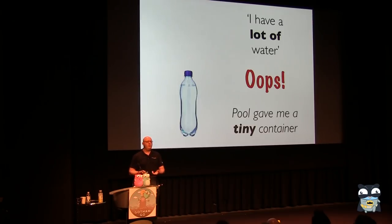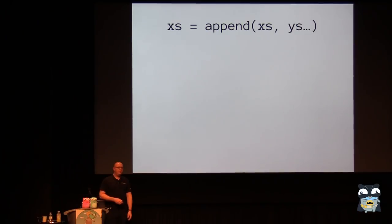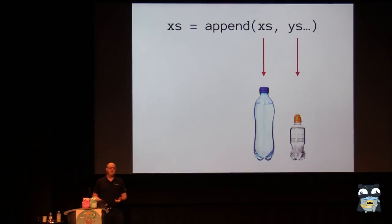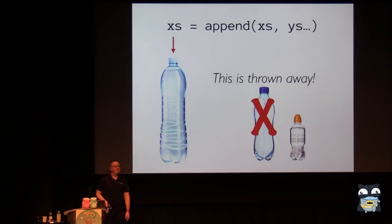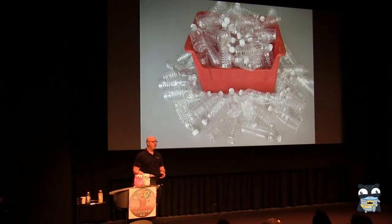That leads to circumstances where you have a little bit of water and the pool gives you a giant container — you don't need all that space. Or the opposite: you have a lot of data but only got a tiny container. And that raises the question of what happens when the container doesn't fit — this is like append. If you have some x's and append some y's and the container isn't big enough, the runtime allocates a bigger slice, pours everything over, and gives it back. But the old one is thrown away, so if you're using sync.Pool but also using append, you'll leak.